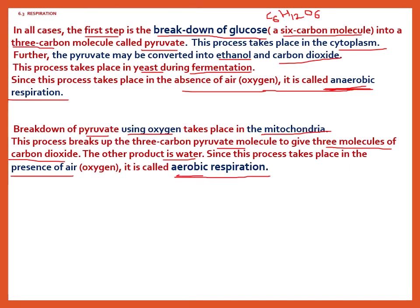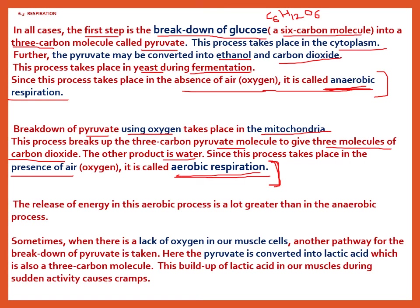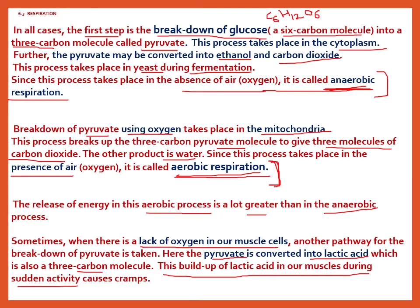Respiration is of two types: aerobic and anaerobic. Aerobic respiration occurs in the presence of O2, anaerobic respiration occurs without oxygen. The release of energy in the aerobic process is much greater than in the anaerobic process. Sometimes when there is a lack of oxygen in muscle cells, pyruvate is converted into lactic acid, also a three-carbon molecule. This build-up of lactic acid in muscles during sudden activity causes cramps.